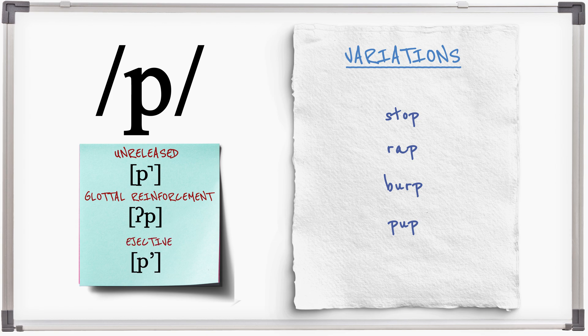Alternatively, an ejective P could occur where the sound is released by pushing air out using pressure from the lips: stop, rap, burp, pup.